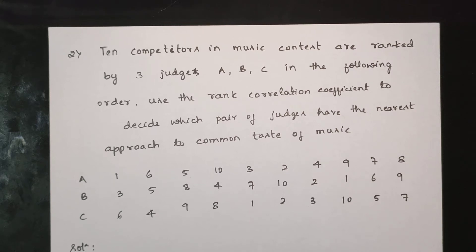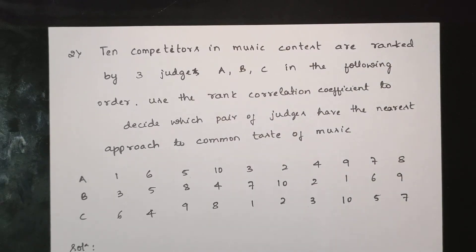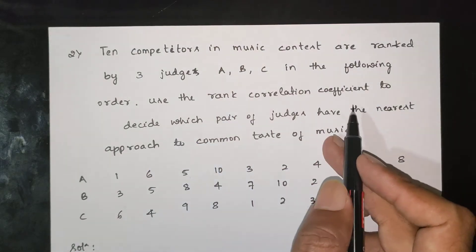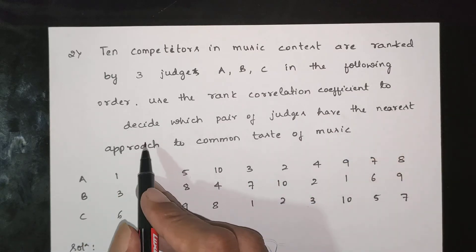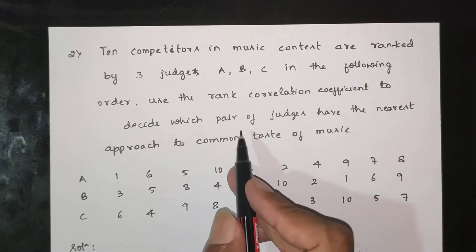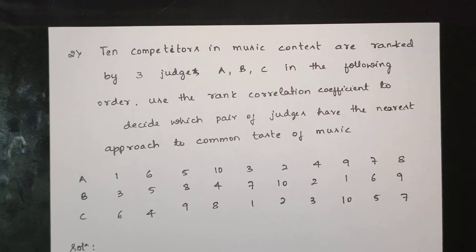Next question. Ten competitors in a music contest are ranked by three judges A, B, and C in the following order. Use the rank correlation coefficient to decide which pair of judges are the nearest opposed to common taste of music.